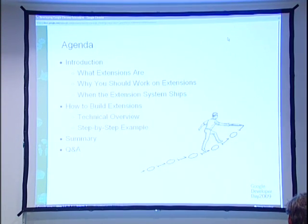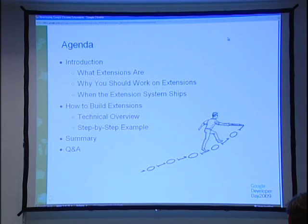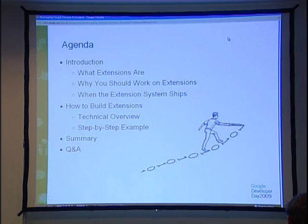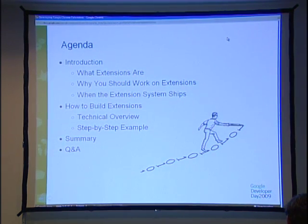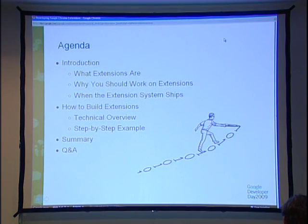I'll take a specific example and walk through how we would go about coding it step by step. We'll start out with a really simple hello world type of example, add more and more features until we end up with a non-trivial and hopefully useful extension. After that I'll do a quick recap of the things that I covered. And finally I'll take your questions at the end. But also, this is pretty informal, so if you have questions at any point, just shout them out or raise your hand.